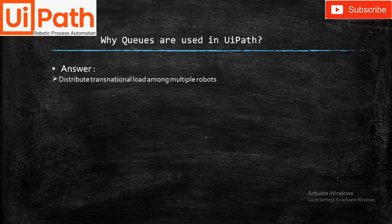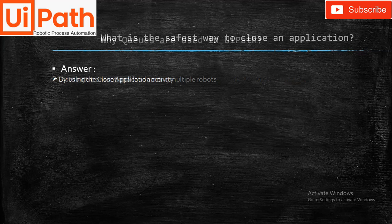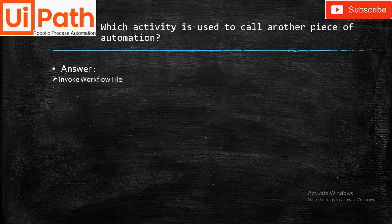Why are queues used in UiPath? To distribute transactional load among multiple robots. What is the safest way to close applications? By using the Close Application activity. Which activity is used to call another piece of automation? The answer is Invoke Workflow File.